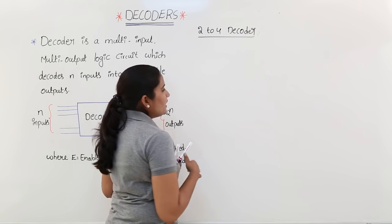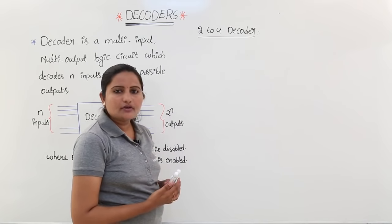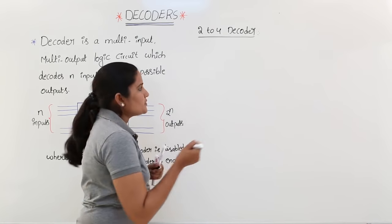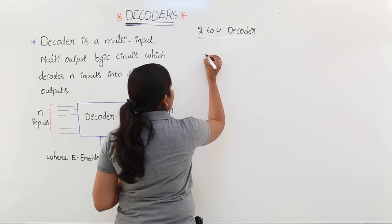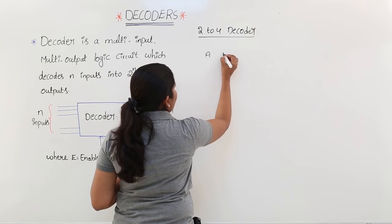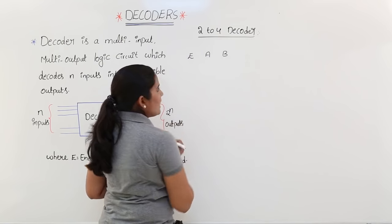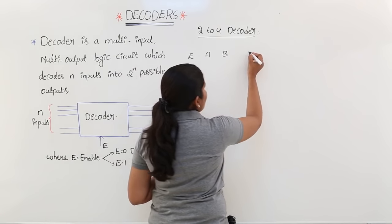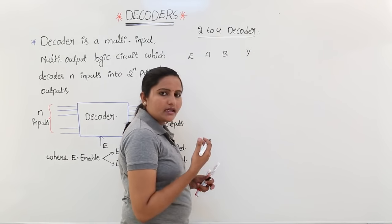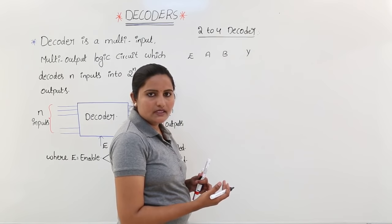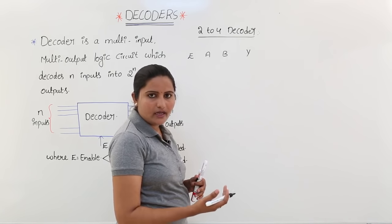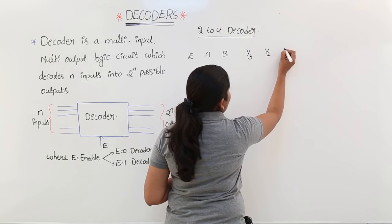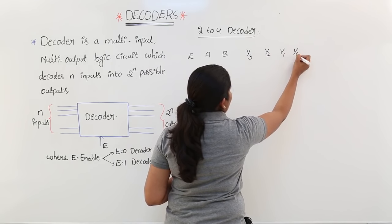In a 2-to-4 decoder there are 2 inputs and 4 outputs. The 2 inputs are A and B, and I am also taking enable as an input. The 4 outputs are Y3, Y2, Y1, and Y0.